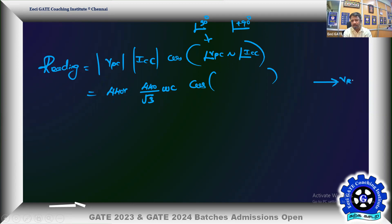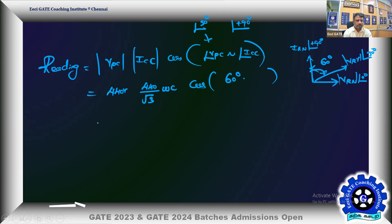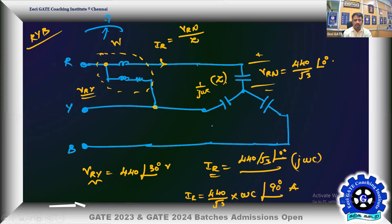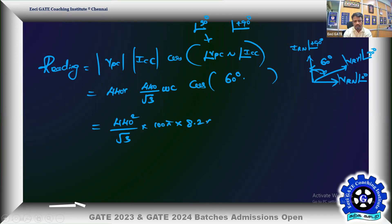V_RN is at angle 0, so I_R is at angle +90 degrees. V_RY is at angle 30 degrees. Therefore the phase difference between I_R and V_RY is 90 − 30 = 60 degrees. The wattmeter reading becomes: 440² / (√3 × 100π × 8.2 × 10⁻⁶) × cos(60°), where cos(60°) = 0.5.